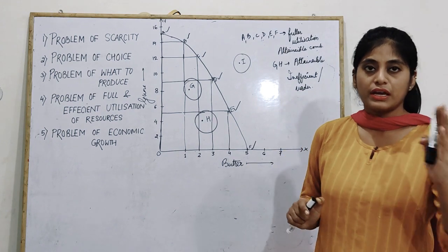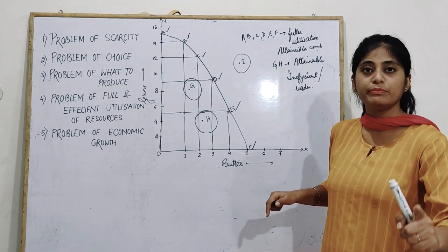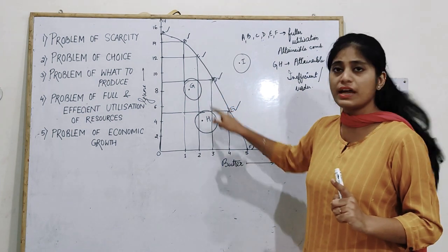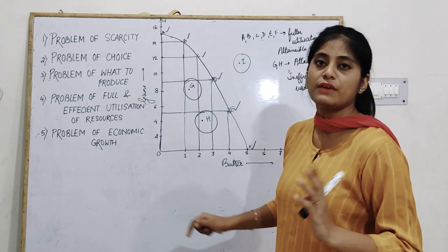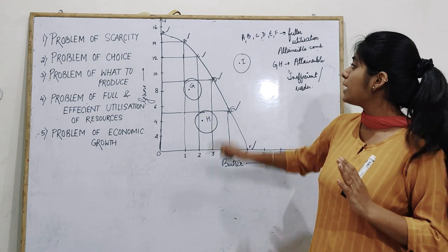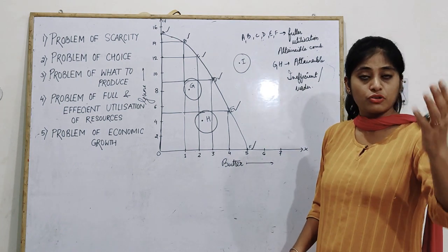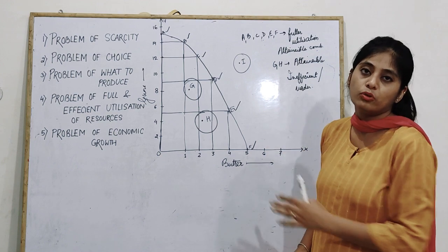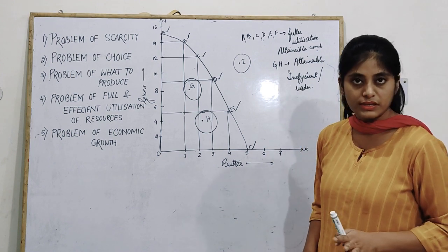To summarize: points A, B, C, D, E, and F are attainable and represent full utilization of resources. G and H are attainable but inefficient — under-utilization of resources. Point I represents limited resources; you cannot attain those points — that is a non-attainable combination.